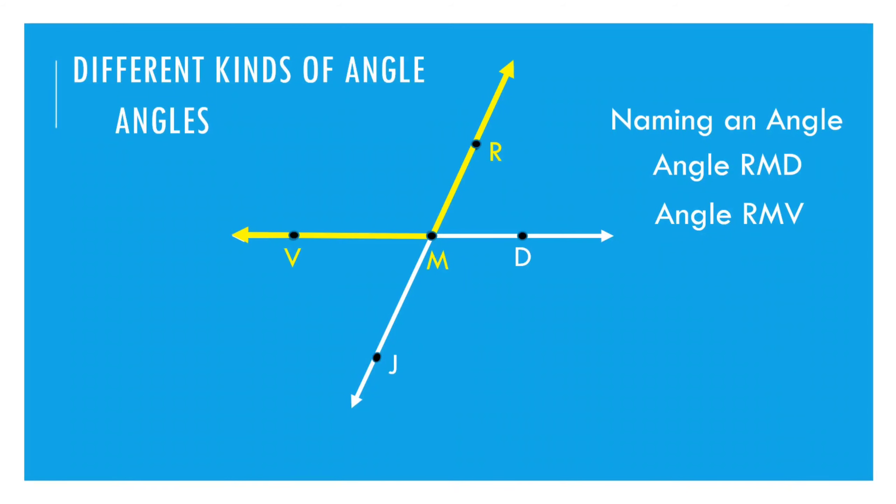Dito tayo sa nasa bandang ibabang part. We have angle V, M, J. So, ang pangalan ng angle na yun, angle V, M, J. Then, the last angle is angle D, M, J. So, yan, ginamit natin yung word mismo na angle. But, we can name an angle using the symbol. We can denote a symbol like this. Kung papangalanan na natin ang angle na yan, yan, I see angle R, M, D. Kapalit nung word na angle. So, we have angle R, M, V. Angle V, M, J. And angle D, M, J. So, we can use that also in naming an angle. Pero, usually, itong symbol na ito yung ginagamit natin.